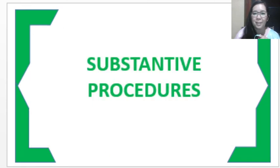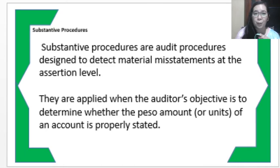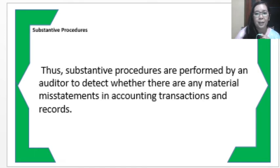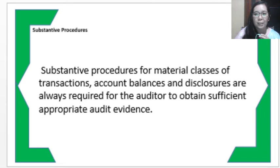The next part is about substantive procedures, which is another audit procedure. Substantive procedures are audit procedures designed to detect material misstatement at the assertion level. This is applied when the auditor's objective is to determine whether the peso amount or unit of an account was properly stated in the financial statements. Substantive procedures are intended to produce evidence to support the assertion that there are no material misstatements with regard to the completeness, validity, and accuracy of the financial statements.